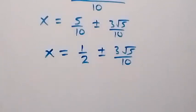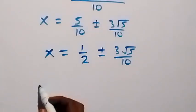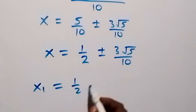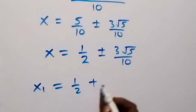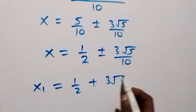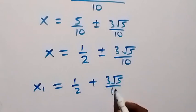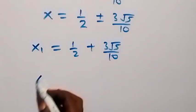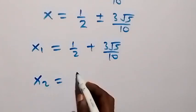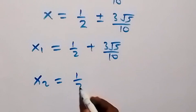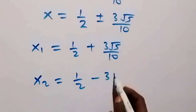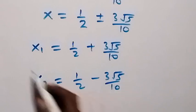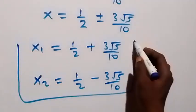We have two solutions here: x₁ equals to 1/2 plus 3√5 over 10, and x₂ equals to 1/2 minus 3√5 over 10. So we have these two solutions to this given problem.